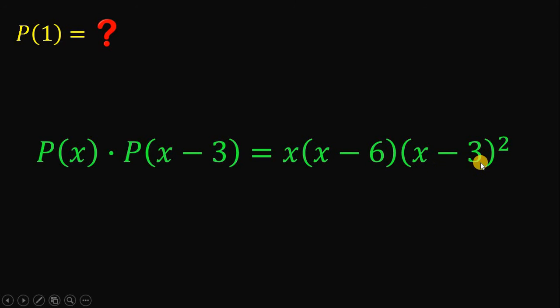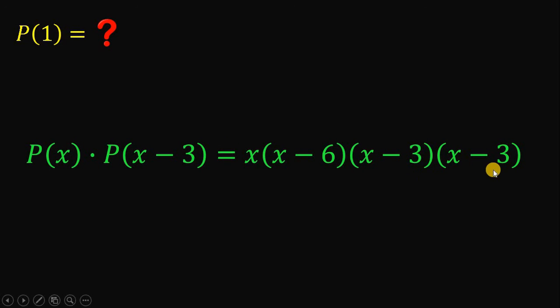And now x minus 3 quantity squared can be written as x minus 3 multiplied by itself, so x minus 3 multiplied by x minus 3. Now let's rearrange some terms a little bit. So we have x multiplied by x minus 3 times x minus 3 times x minus 6.